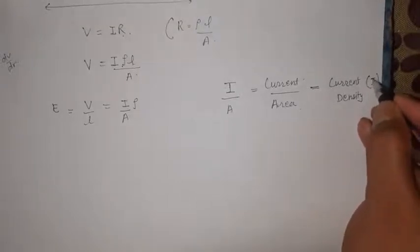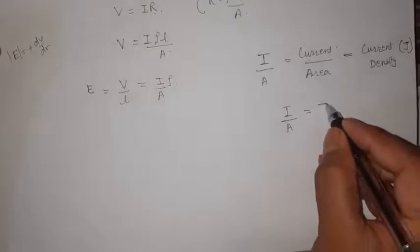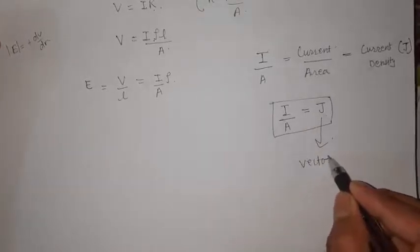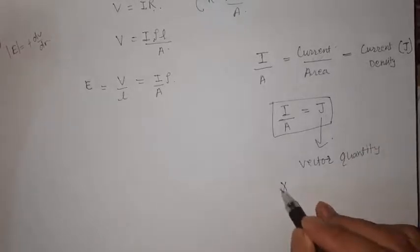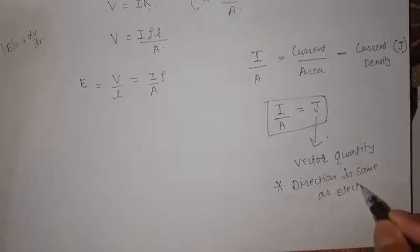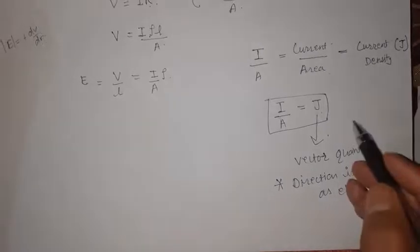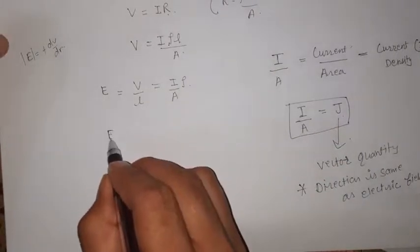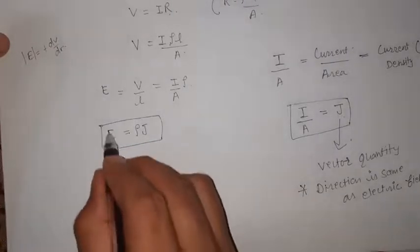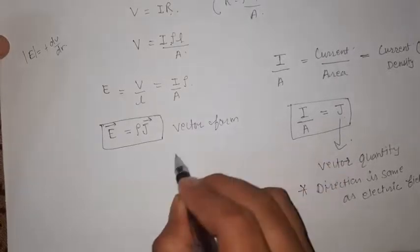The quantity I/A — current per unit cross-sectional area — is called current density, denoted by J. Current density J is a vector quantity whose direction is the same as that of the electric field E (and also the same as current direction). So substituting, E = ρJ. Writing in vector form: vector E = ρ·vector J. This is the vector form of Ohm's law.